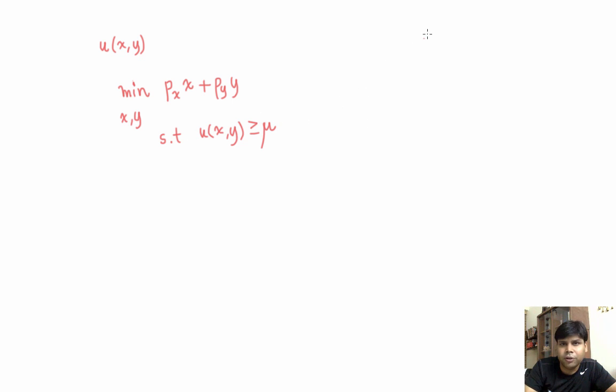If this is how the indifference curve looks corresponding to mu level of satisfaction, then this is the constraint. The constraint is to pick from this region a point that minimizes the expenditure. What we're going to do is make iso-expenditure curves.